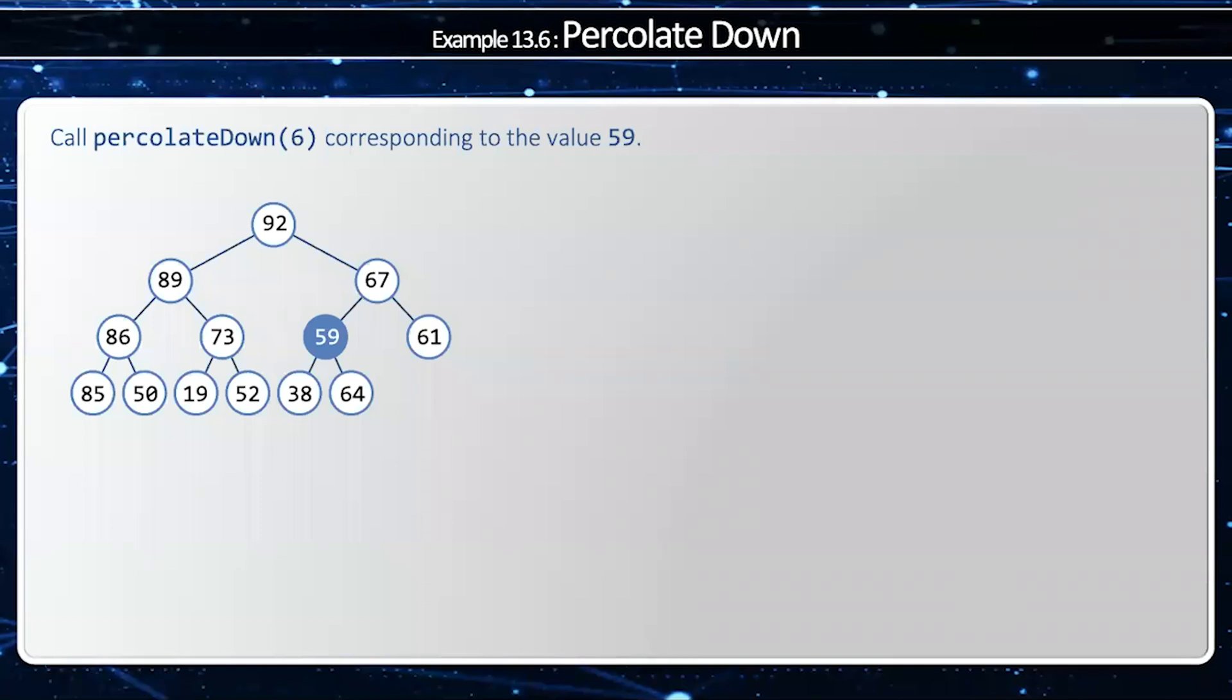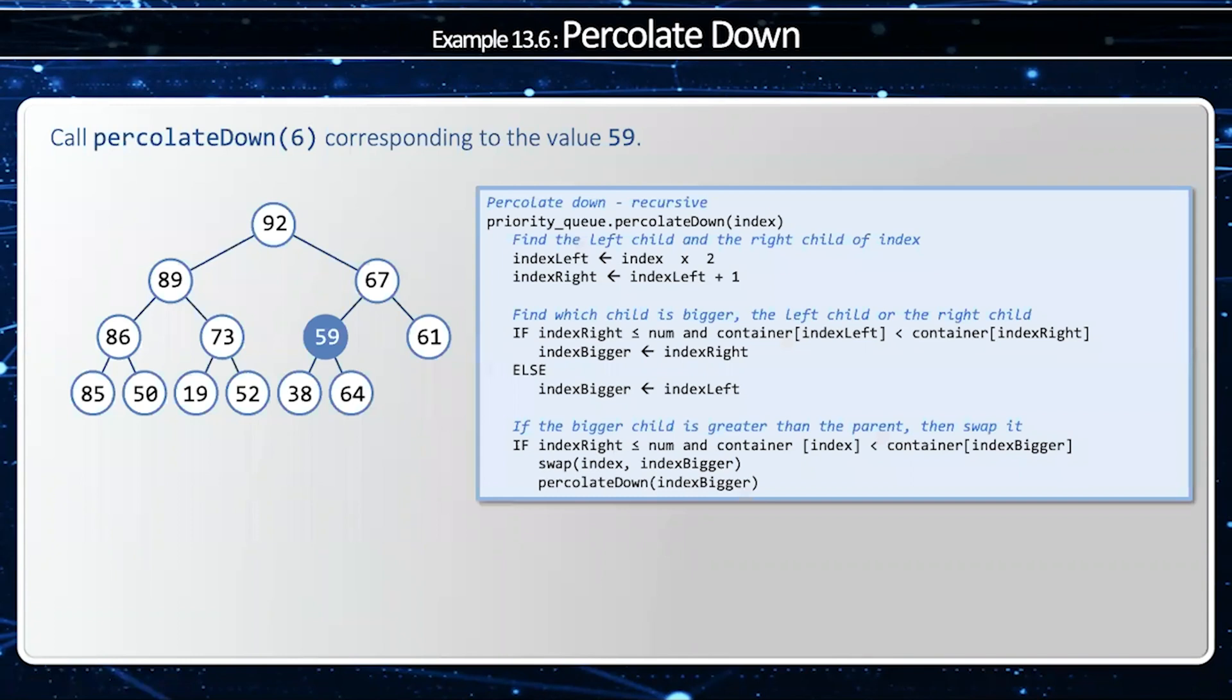We're going to call percolate down on index six. And once again, I'm going to remind myself what my algorithm is, and I'm going to draw my indices. Now, my left index and my right index are going to be index times two and times two plus one, which would be 12 and 13.